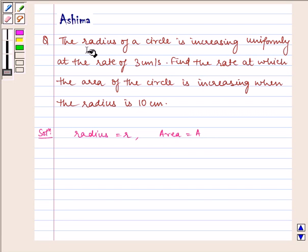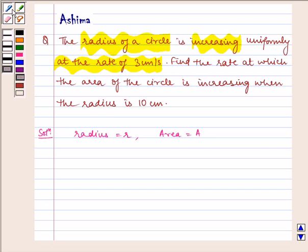It is given to us that radius of a circle is increasing at the rate of 3 cm per second. That is, dr by dt is equal to 3.